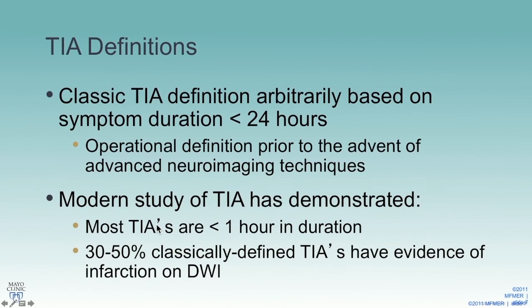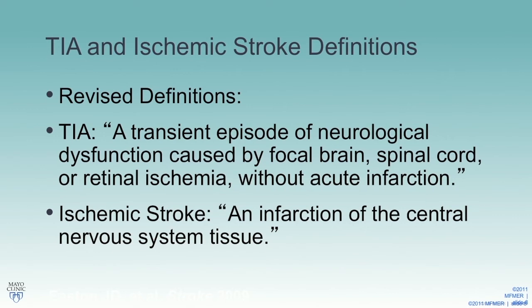This is a good example of some of the changes that have occurred with the definition of TIA. The classic definition was based on an arbitrary symptom duration of 24 hours — an operational definition made probably in the 1960s, before the advent of MRI. Now we have DWI, and we know that about a third of patients will have evidence of restricted diffusion despite resolution of their symptoms. So we're moving from a time-based definition to a tissue-based definition, which was endorsed by the American Stroke Association in a clinical practice guideline in 2009.